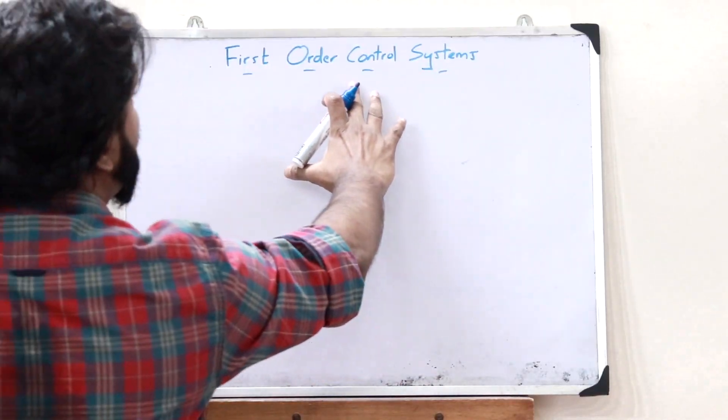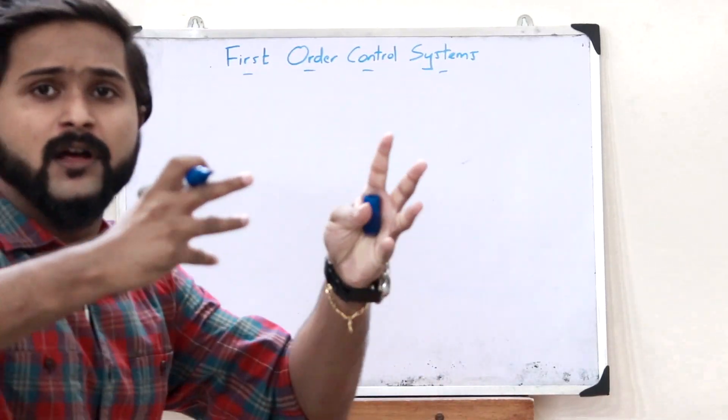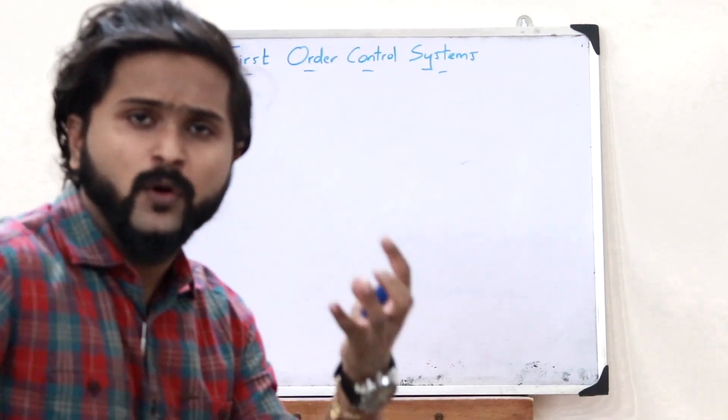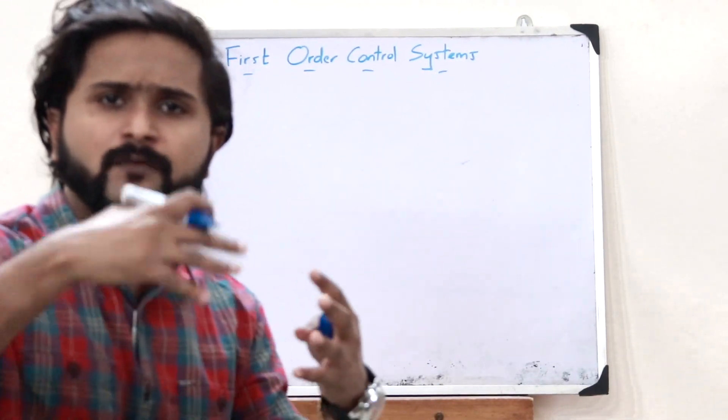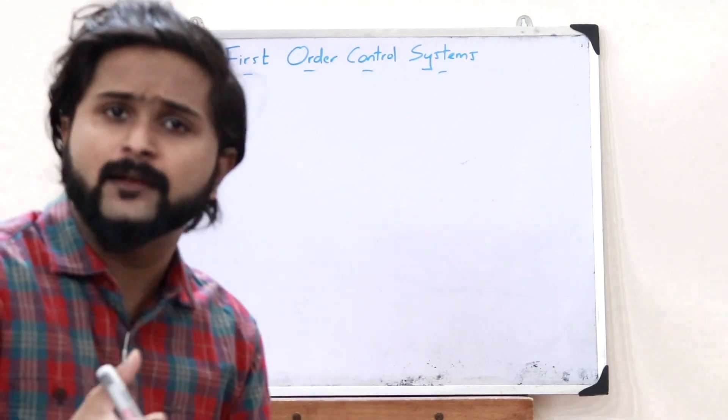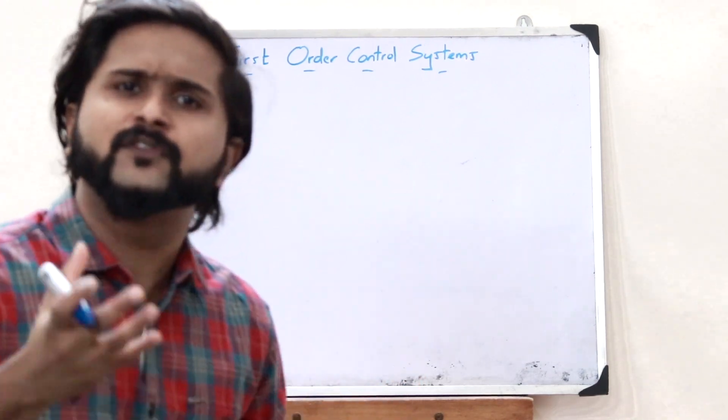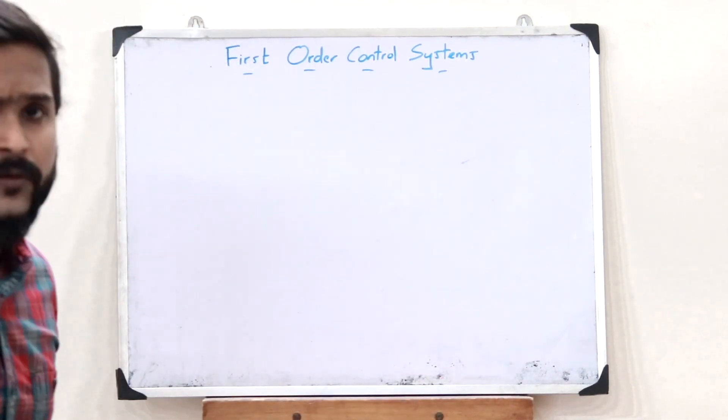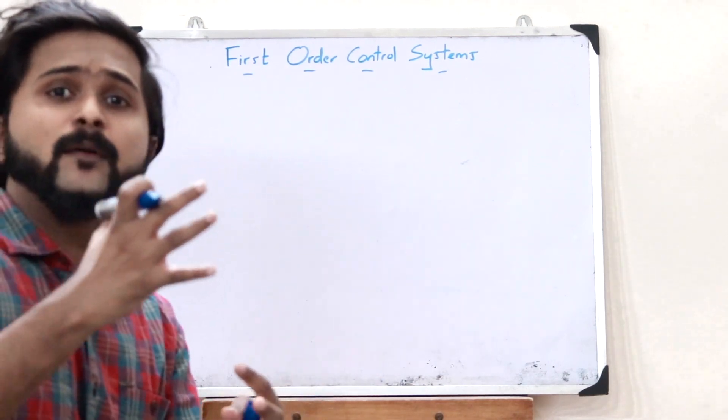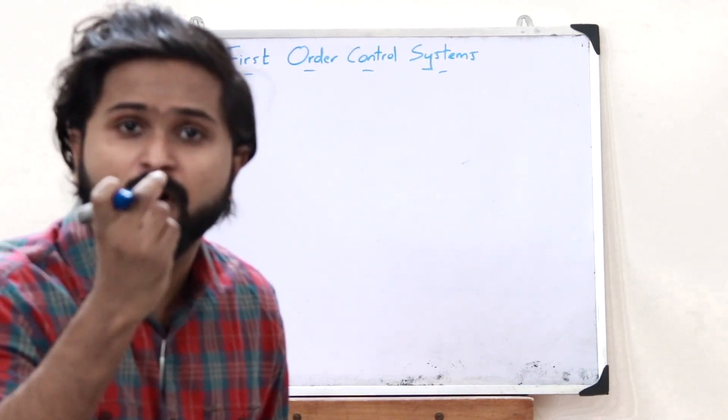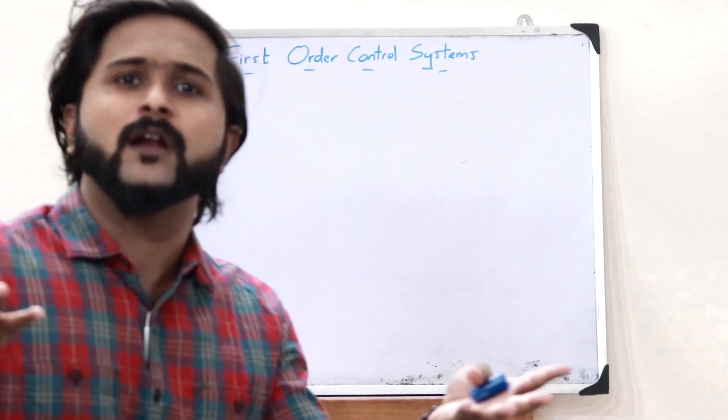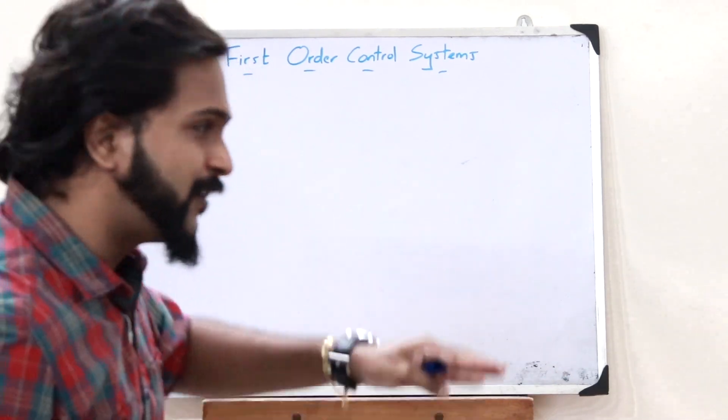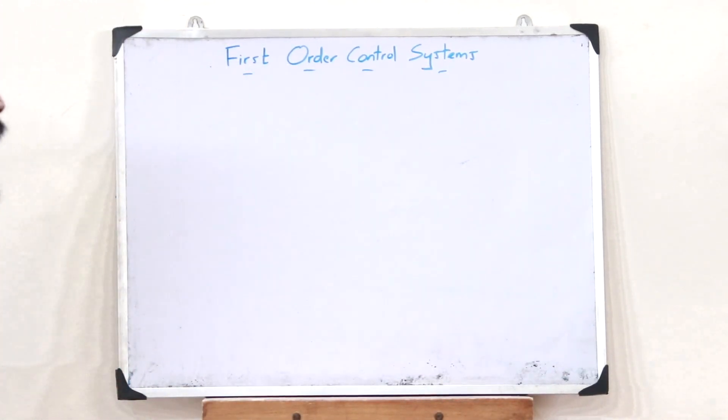We know that every control system has got a particular transfer function. A transfer function is simply a ratio of the output divided by the input. A particular control system is said to be a first-order control system if the maximum value of the power of S is equal to 1 in the denominator of the transfer function of this particular control system.